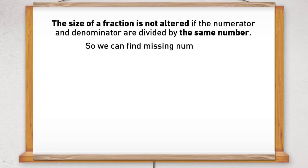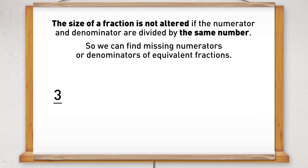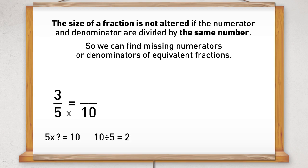So we can find missing numerators or denominators of equivalent fractions. Suppose I wanted to write three-fifths as an equivalent fraction in tenths. I need to work out what the five has been multiplied by to get ten, or five times what makes ten. Since ten divided by five equals two, then the five must have been multiplied by two to get ten. So we will get an equivalent fraction provided we also multiply the numerator by two. Three times two equals six, so my equivalent fraction is six-tenths.